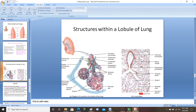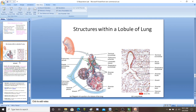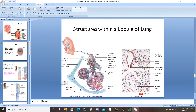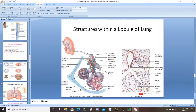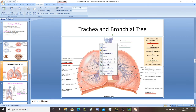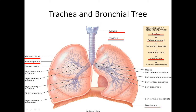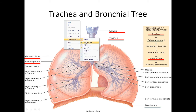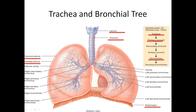That takes care of that part of the list. Now we have the diaphragm, external and internal intercostal muscles, and the pleura. The diaphragm is a muscle right under your lungs — it's actually the divider between your thoracic cavity, where your heart and lungs are, and your abdominal cavity, where your digestive and reproductive organs are.